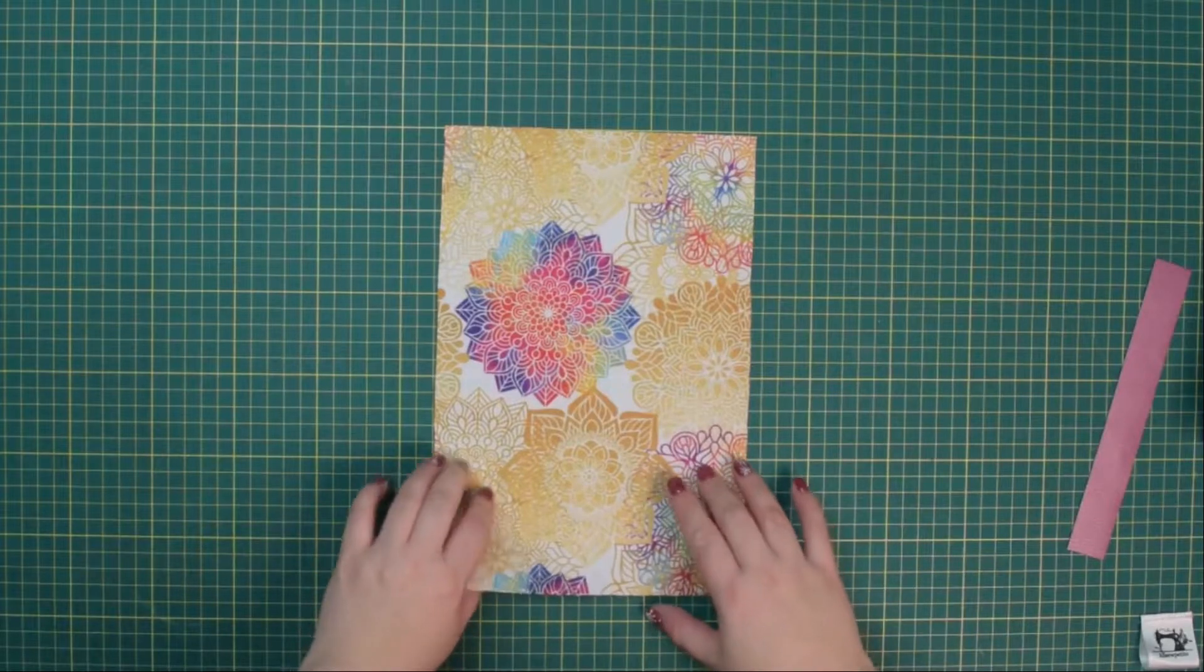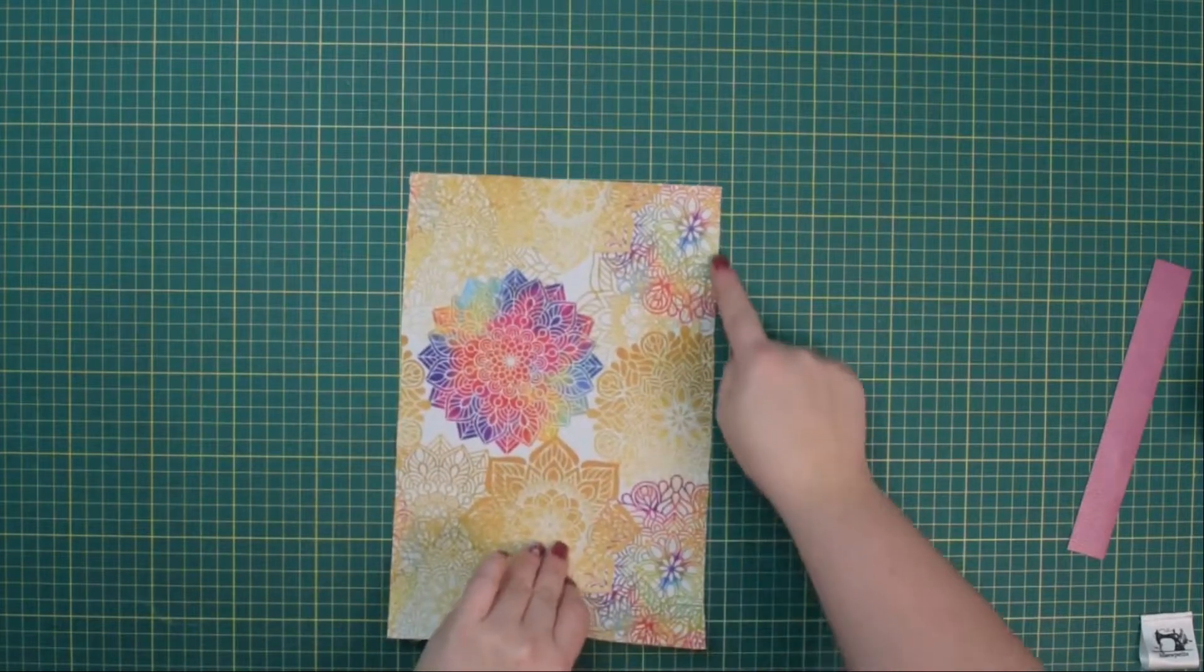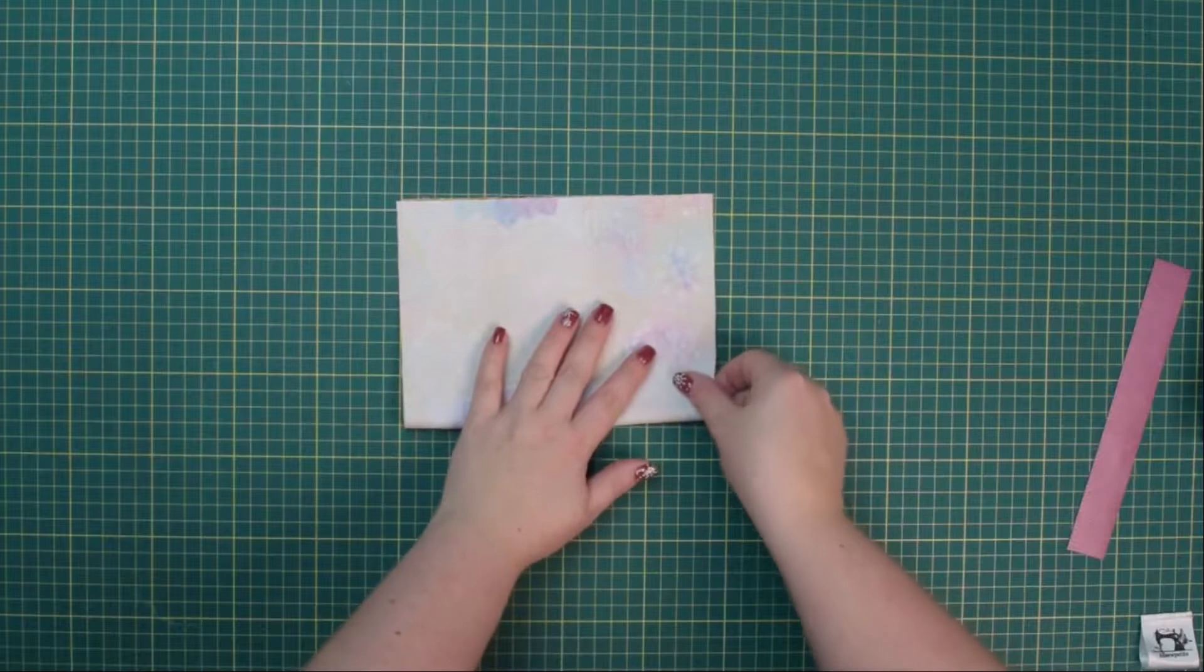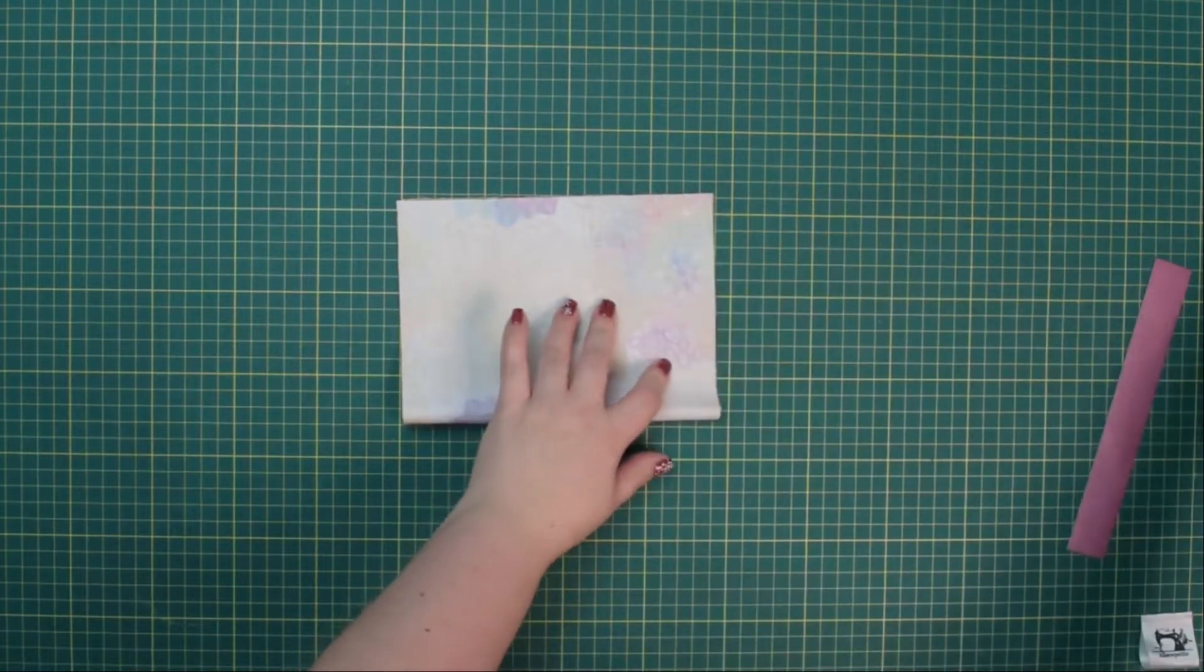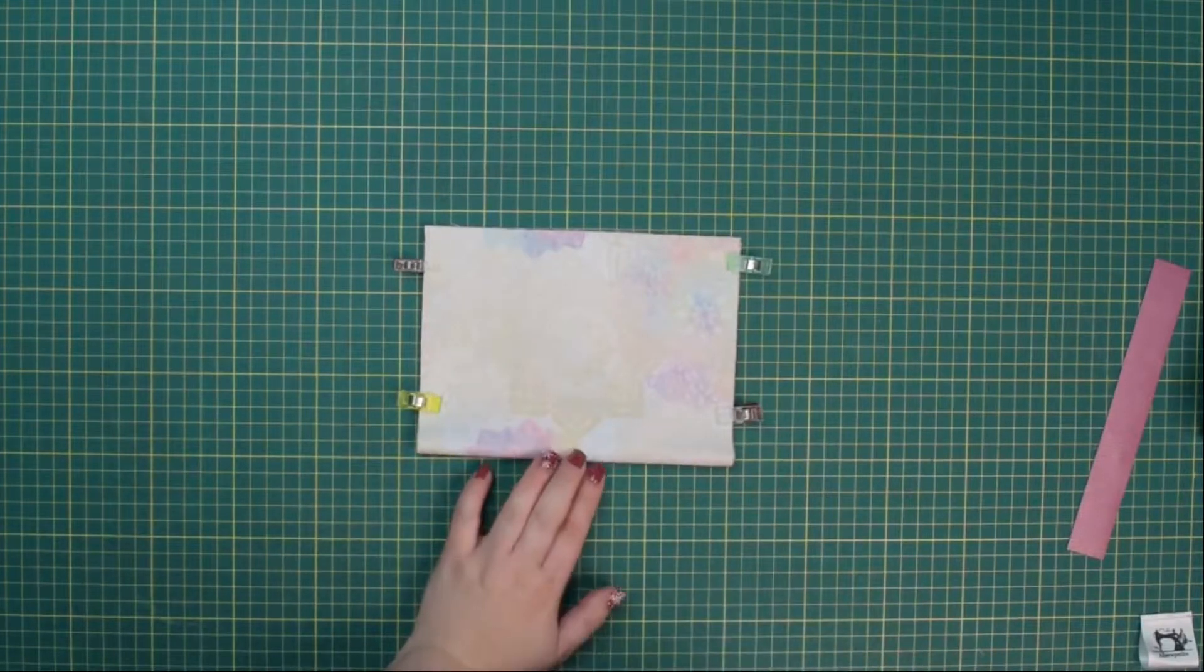Take your slip pocket and with right sides together you're going to fold it in half along that longer edge. You can clip that in place and then we're going to sew the sides using one centimeter seam allowance.